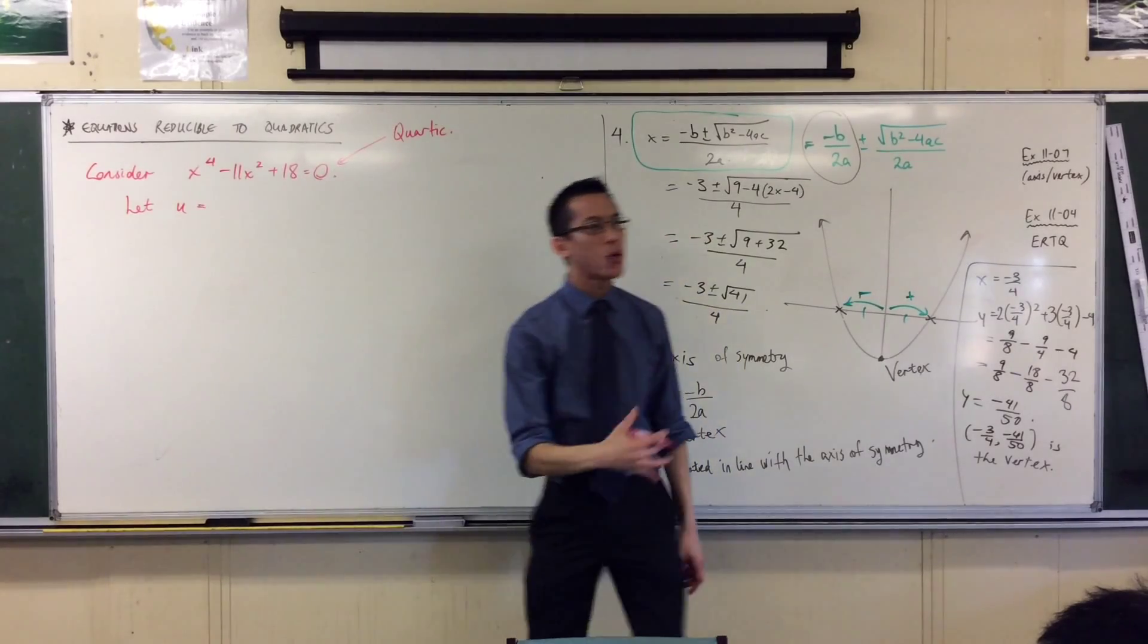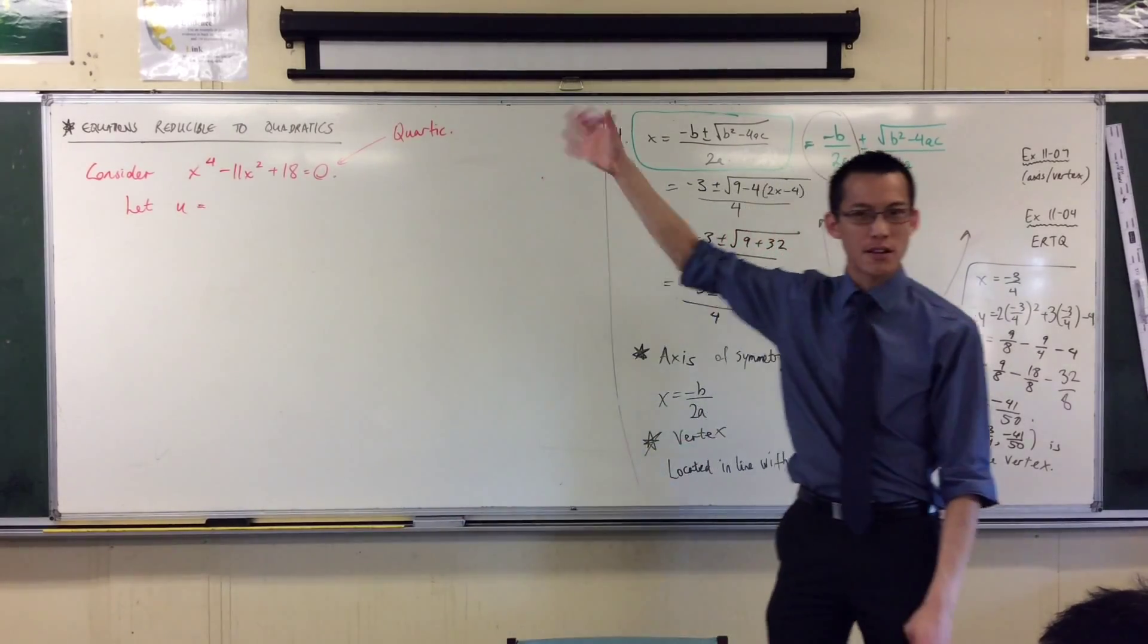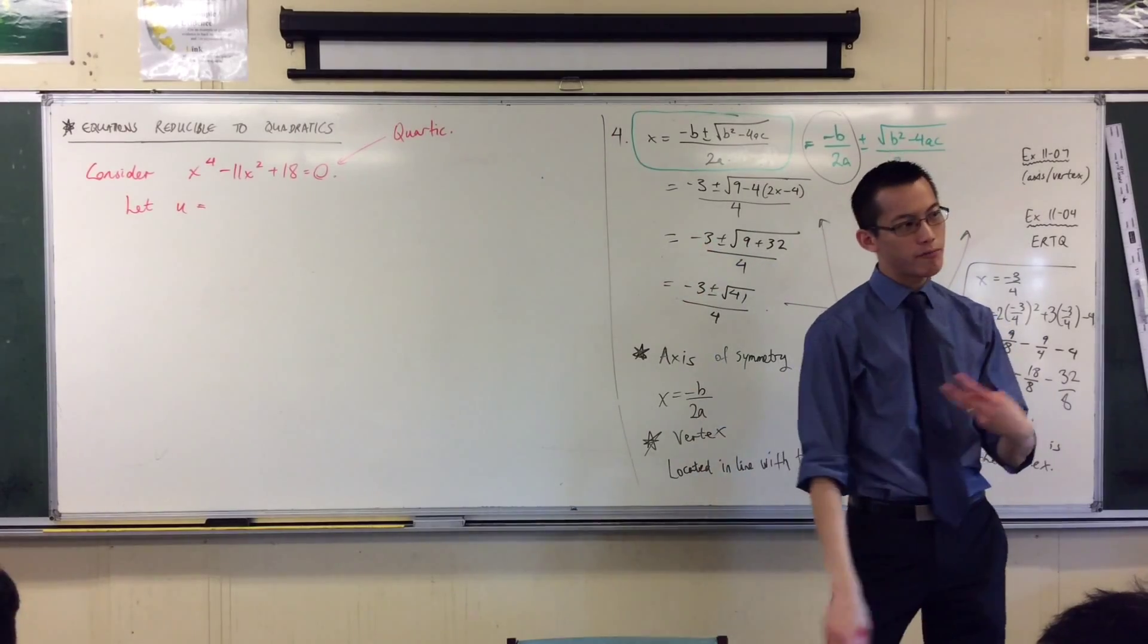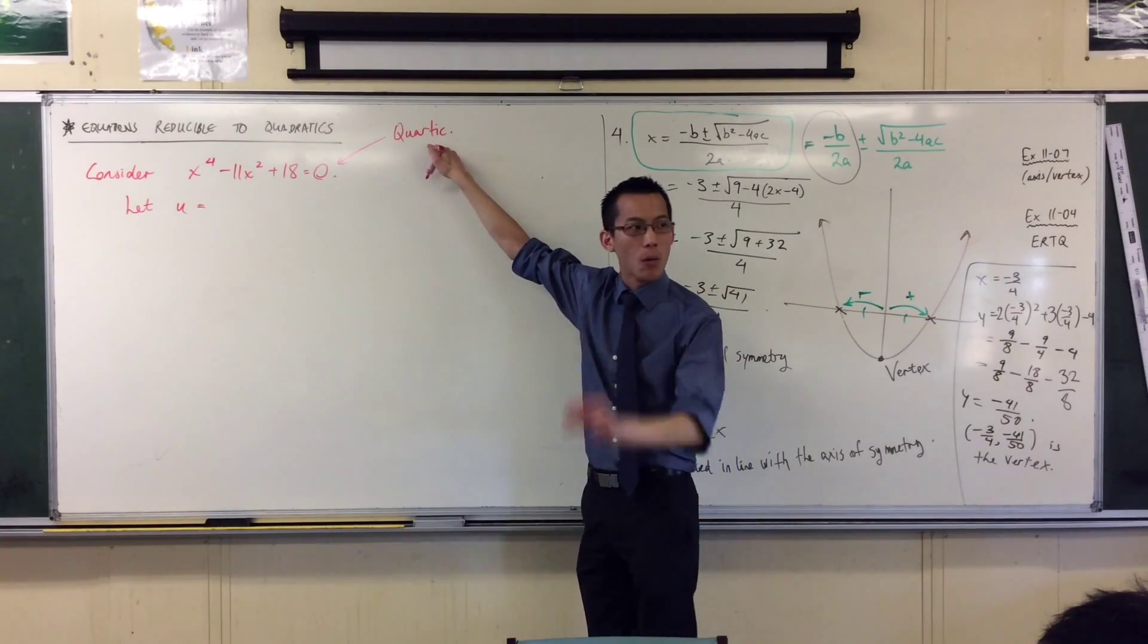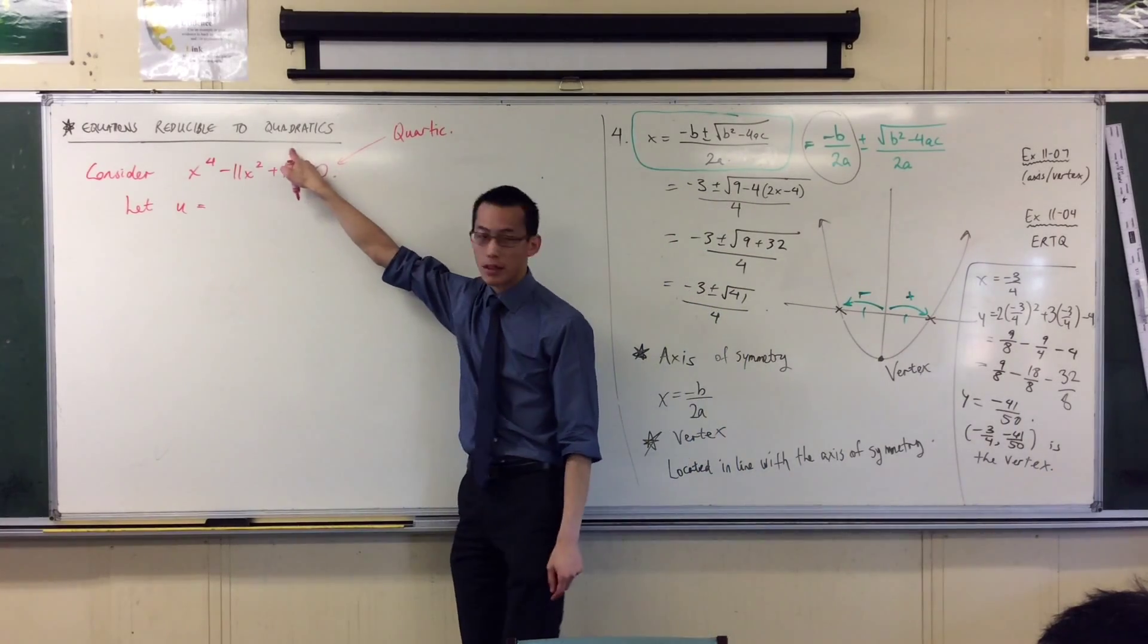What I'm going to do is swap out those x to the fours—they're a bit of a problem for me. I want to rewrite this equation so it doesn't have x to the four in it, so it's not a quartic anymore. I want to rewrite it in such a way that it looks like a quadratic.